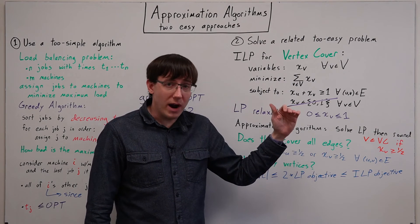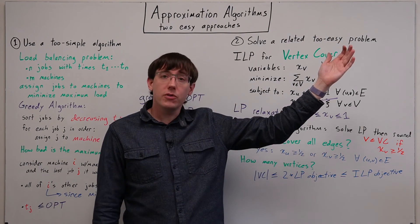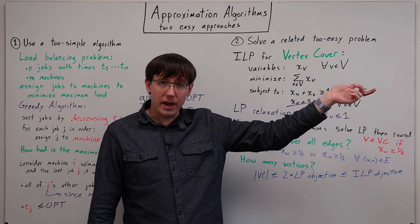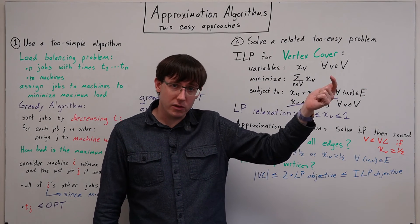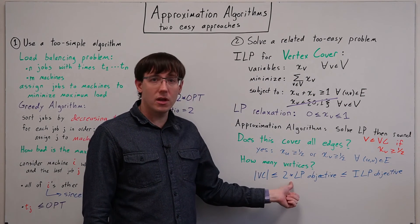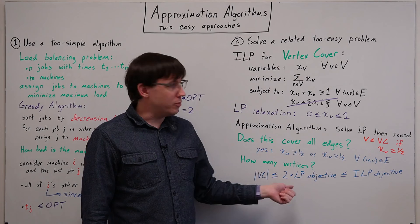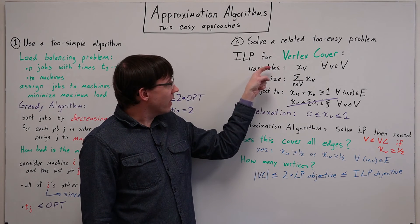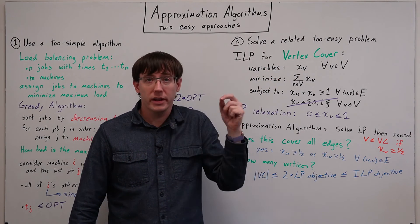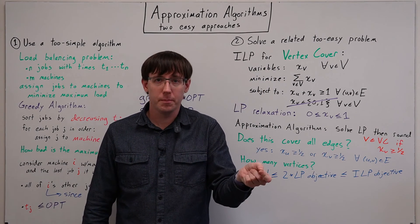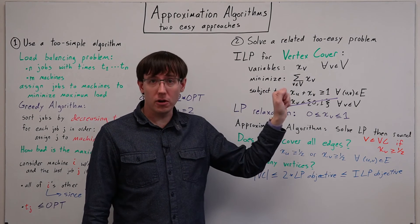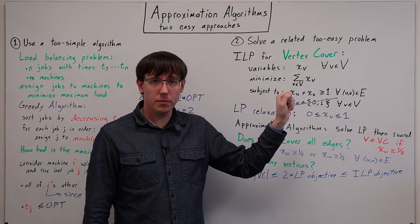And so if we rounded all of those variables up, then the number of vertices would be twice the objective that we got when we minimized in the linear program, since that objective was the sum of all the variables.